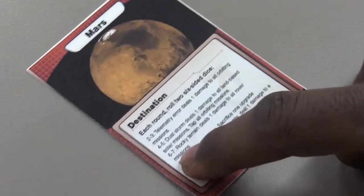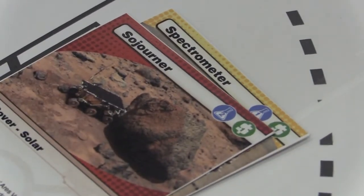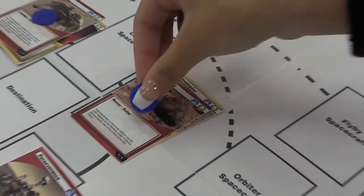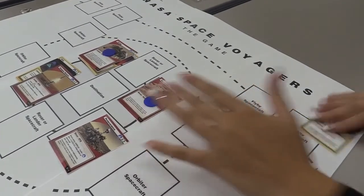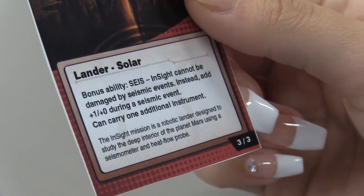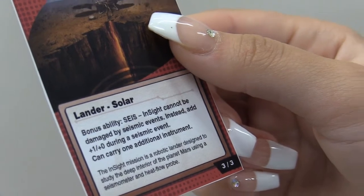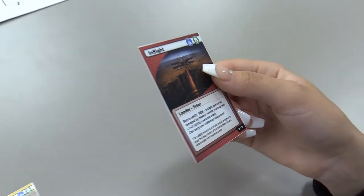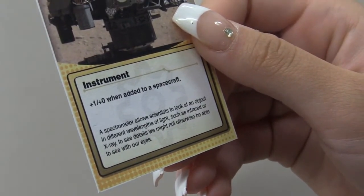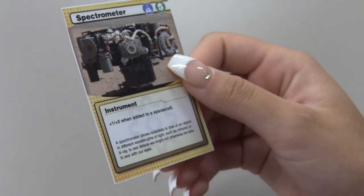Take the actions described on the destination card with all the relevant spacecraft and instruments in play, tallying damages by placing sticky notes, pennies, or other markers on the applicable cards and removing those that reach zero durability. Damages are permanent and cumulative as turns continue throughout the game. Spacecraft that reach zero durability have failed and are removed from play. Some spacecraft and instruments have special abilities that allow them to withstand damages, so be sure to read the cards carefully.